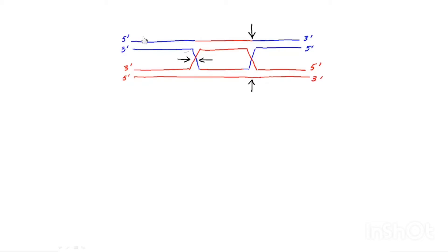From here, this blue chromosome on the other side of the resolution Holliday junction will continue on as a red chromosome, and this red chromosome over here will continue on as a blue chromosome because the transverse cuts lead to crossover.